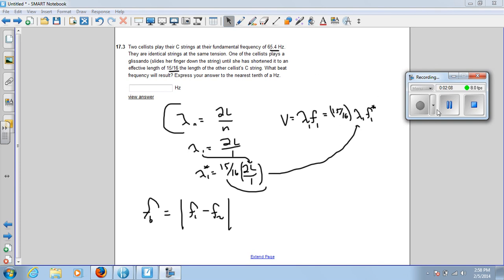So if you set up this equation, you can solve for f1 asterisk, and this will be the frequency of the second cellist with a shorter string.